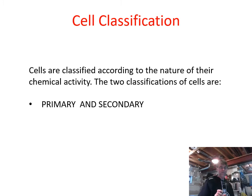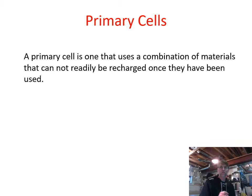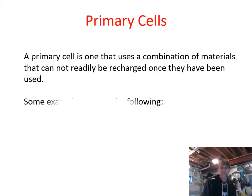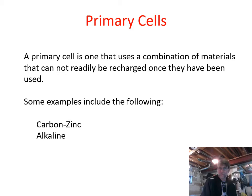There are two different types of cells: primary and secondary. A primary cell is one that uses a combination of materials that cannot readily be recharged once used. The chemical reaction naturally happens in one direction, producing voltage and EMF, but we cannot drive that reaction in the opposite direction. Once the cell has been used, it's done — throw it out and get a new one. Examples of primary cells include carbon-zinc, alkaline, mercury, silver-zinc, and zinc-air.